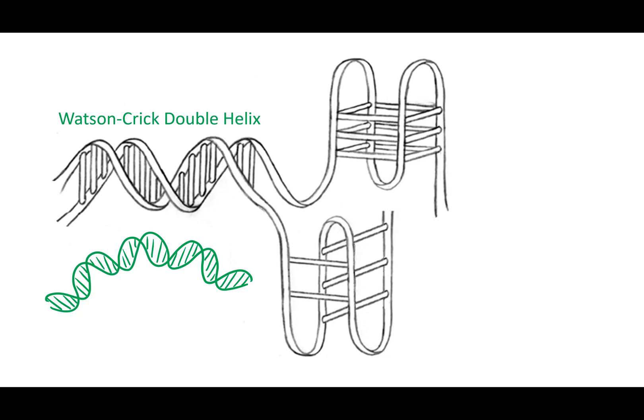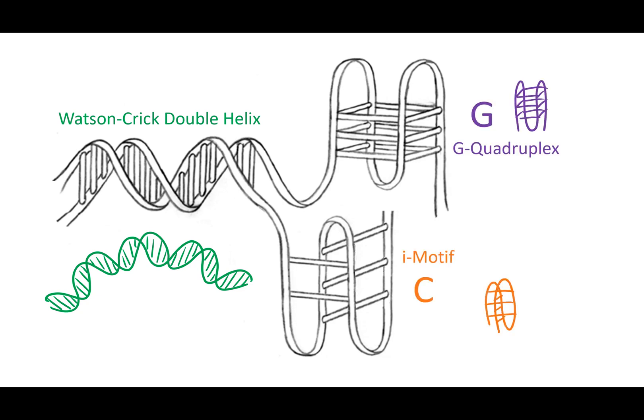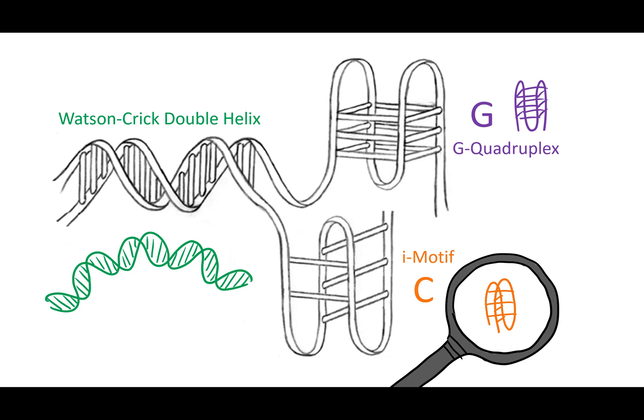DNA that is made mostly of the bases G and C can actually form alternative structures such as G-quadruplexes and i-motifs. These, as you can see, look very different to the typical double helical structure that was first proposed by Watson and Crick in 1953. My group are interested in i-motifs, which form in DNA which contains a lot of the base cytosine. We are looking for ways to visualise the i-motif structure using compounds.